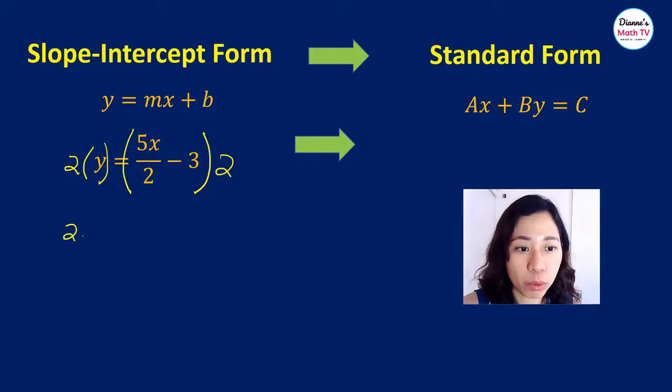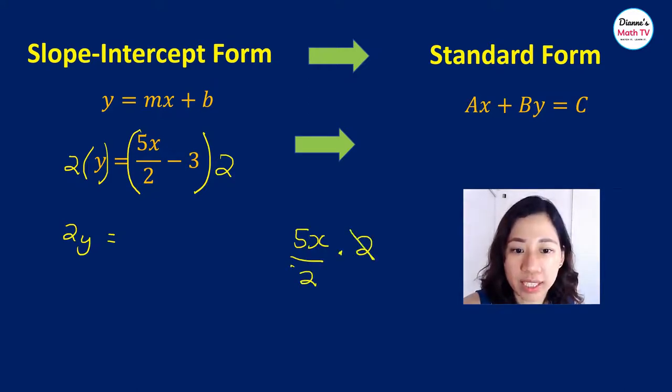So we have now 2y equals 5x over 2 times 2. What is that? We have 5x over 2 times 2, so this gets canceled out. We're left with 5x minus 3 times 2, which equals 6.